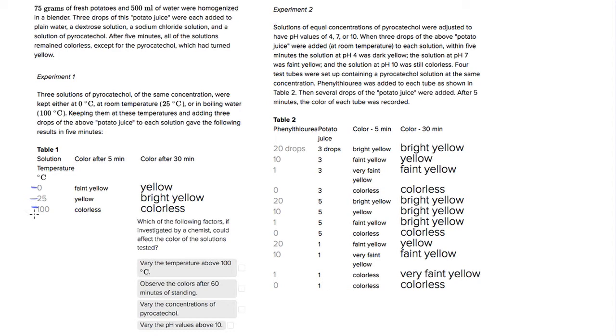But we see that when we look at it at 100 degrees, it's colorless after five minutes and also after 30 minutes. So it leads us to believe that a temperature of above 100 degrees will still have it be colorless because we see that it's yellow when it's between 100 and zero. So that's probably not going to be a good thing to do.